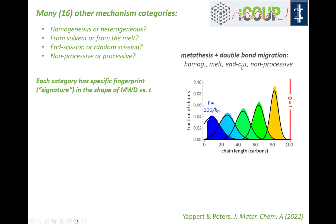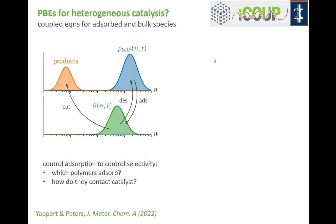That's really where we begin to use population balance equations — not species balance equations — to diagnose what the underlying mechanism might be. Metathesis and double bond migration was one example of homogeneous chemistry where two catalysts combine to do an end cut that is non-processive. What about population balance equations for heterogeneous catalysis?